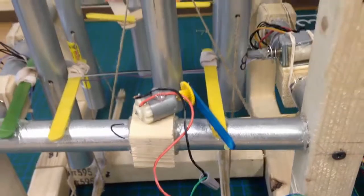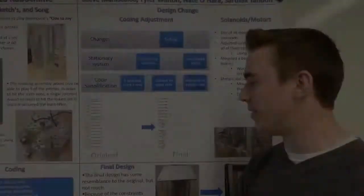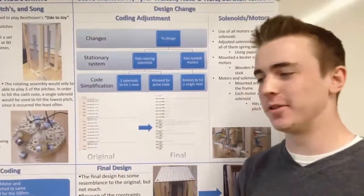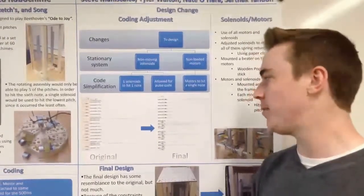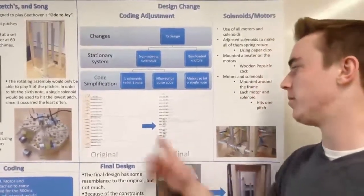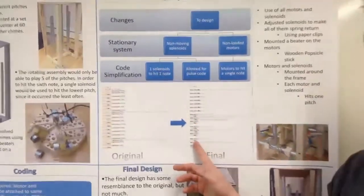And then we decided to do some wire management with hot glue. Our final code was much more simple than the original code because of the six actuators hitting their own note. We used the template provided on my courses by Dr. Gomes for the pulse and motor on and motor off functions.